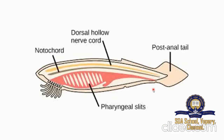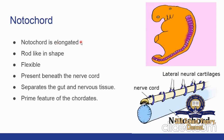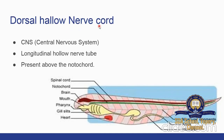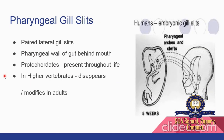The notochord is elongated, rod-like in shape, flexible, present beneath the nerve cord, and it separates the gut and nervous tissue — it is the prime feature of the chordates. The dorsal hollow nerve cord is present in the central nervous system as a longitudinal hollow nerve tube present above the notochord. The pharyngeal gill slits are paired lateral gill slits in the pharyngeal wall of the gut behind the mouth.